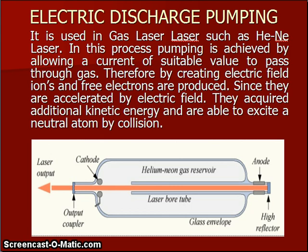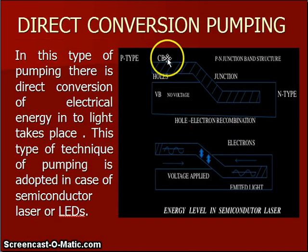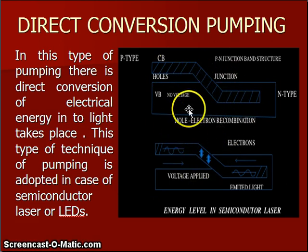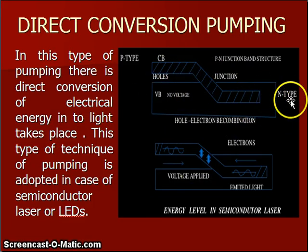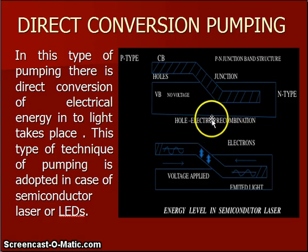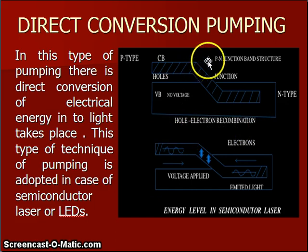The third type is direct conversion pumping. In this type, conversion of electrical energy into light takes place. This pumping is adopted in the case of semiconductor lasers, where a p-type and n-type semiconductor are combined together to form a p-n junction. At the p-n junction there is electron-hole recombination, and due to this recombination, light is emitted at the interface. This type of pumping is also used in LEDs.